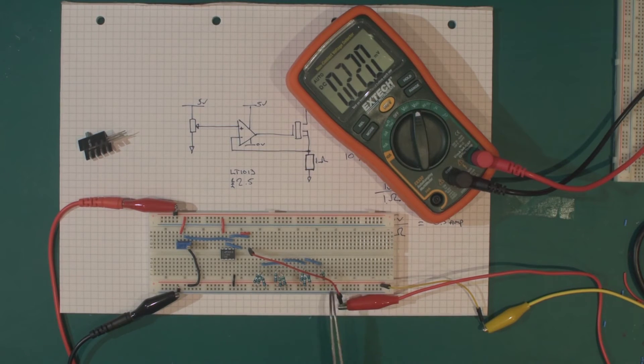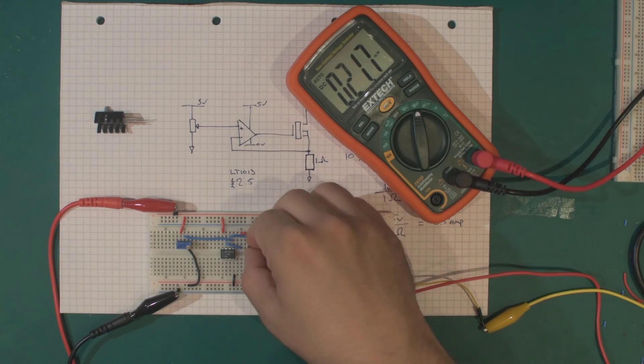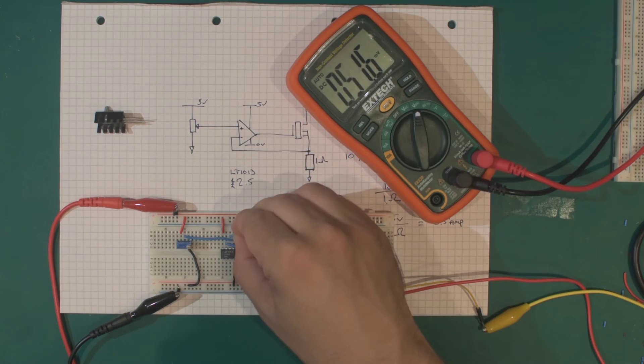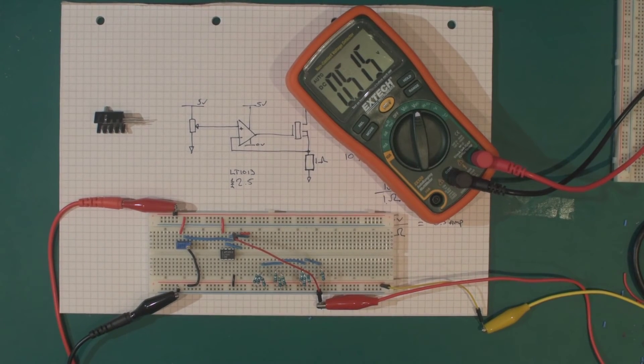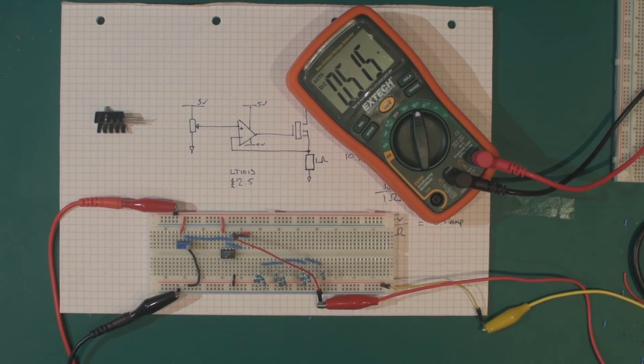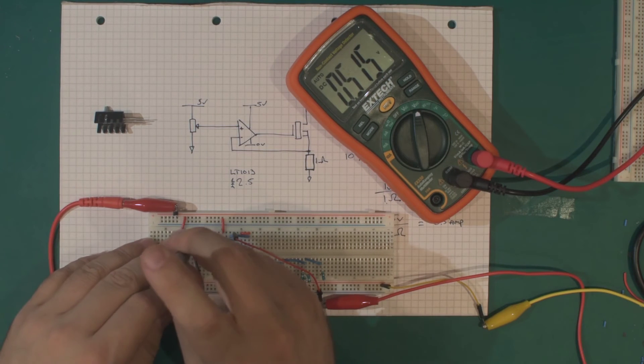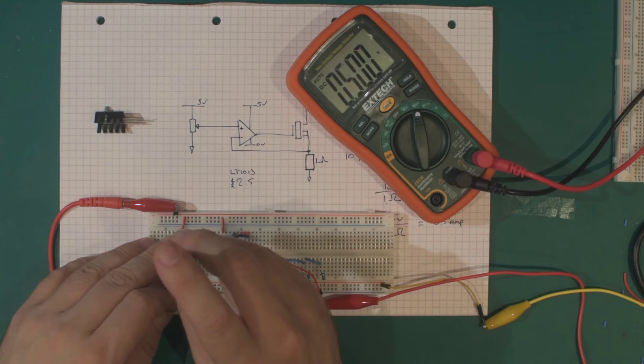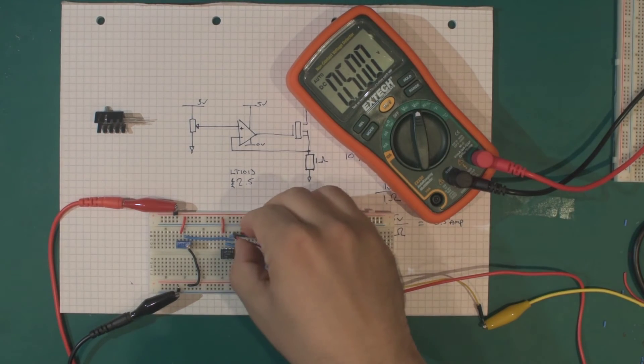I haven't got the MOSFET on at the moment because the first thing I want to do is trim our input. Let's get the power onto this. At 0.5 it's quite handy. Where is my little trim screwdriver? Let's take this down a notch. That means we should be getting about 0.5 volts on the output of the op-amp.